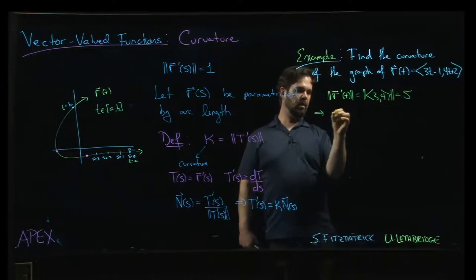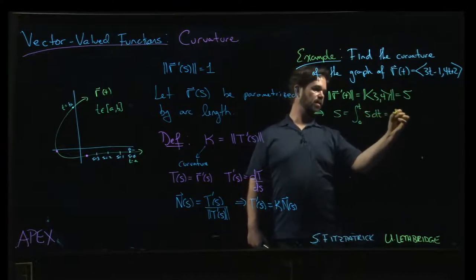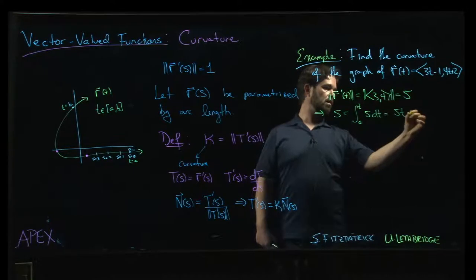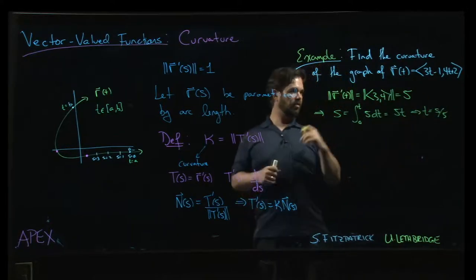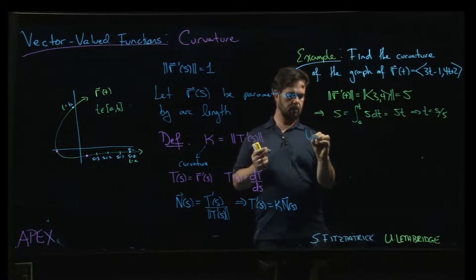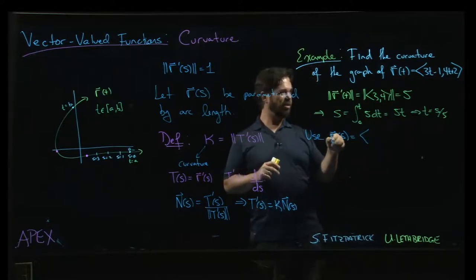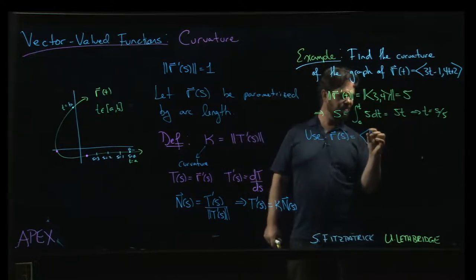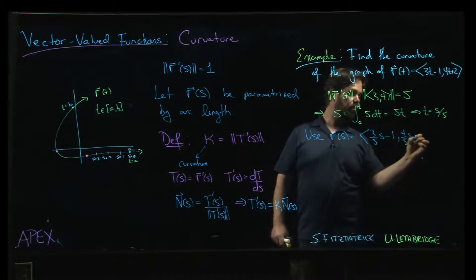And so then we said, well if you take s and you define it to be this integral, that's going to give you 5t. So t is s over 5. And so what we do is we take the original vector valued function, and we replace it with this new function r of s. We're going to use 3 over 5s minus 1, and then 4 over 5s plus 2.